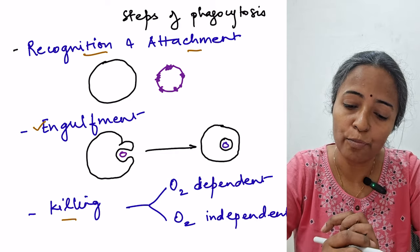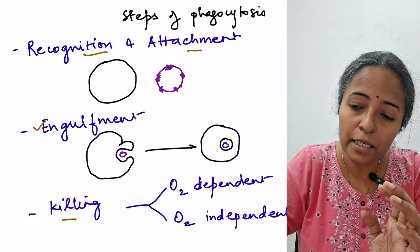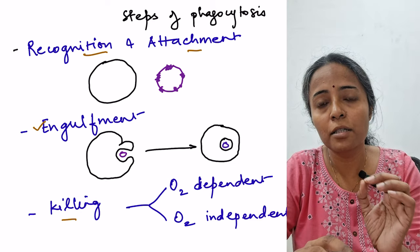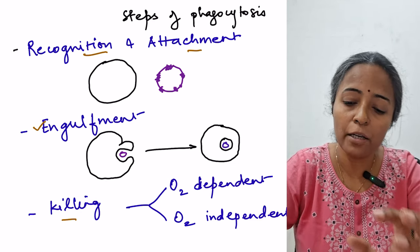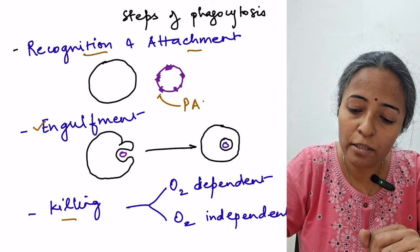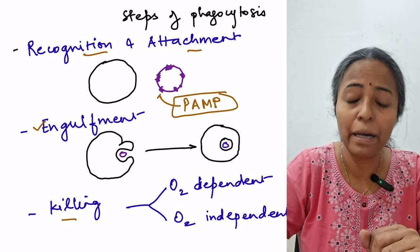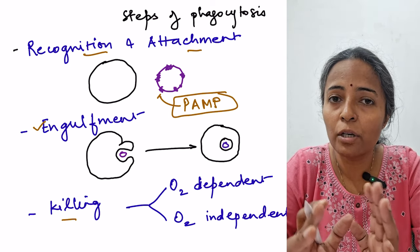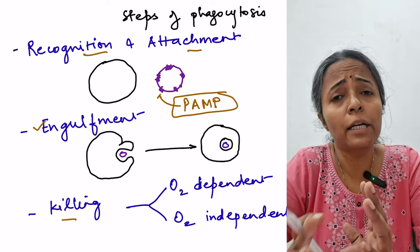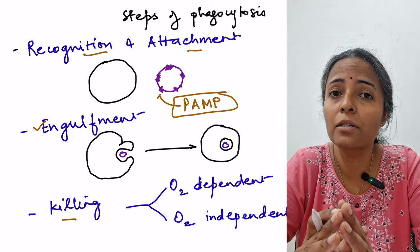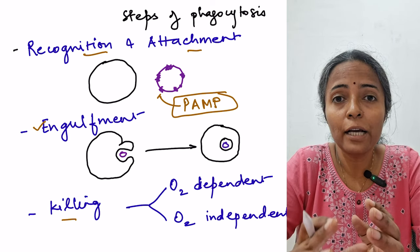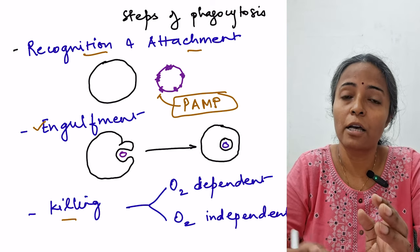In recognition, the phagocyte recognizes the microbe by identifying certain molecular patterns present on the membrane of the microbe. These are known as pathogen-associated molecular patterns, or PAMPs. PAMPs are specific to microbes or anything foreign to us, and are not present on self cells — this is important so that phagocytes do not attack our own cells.